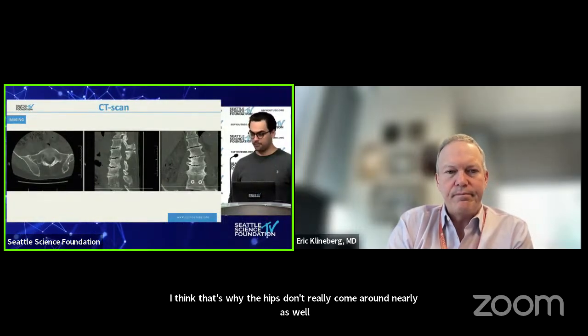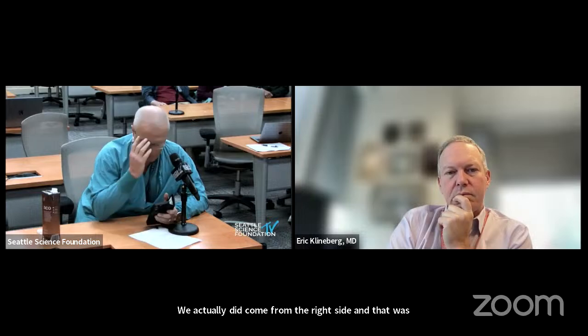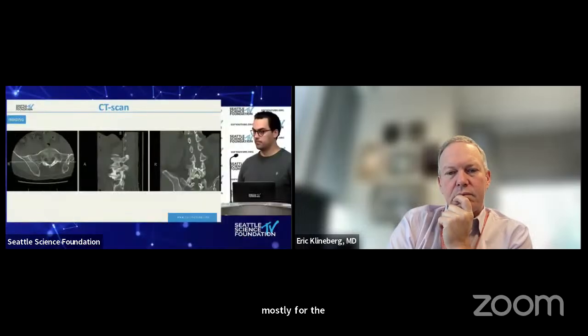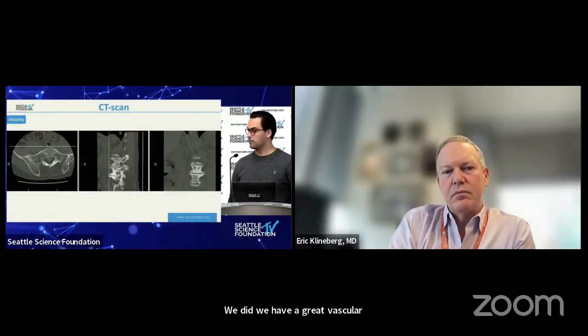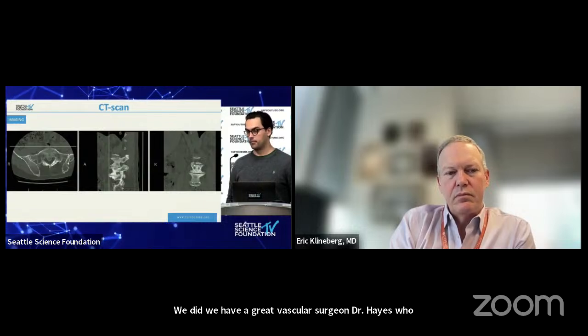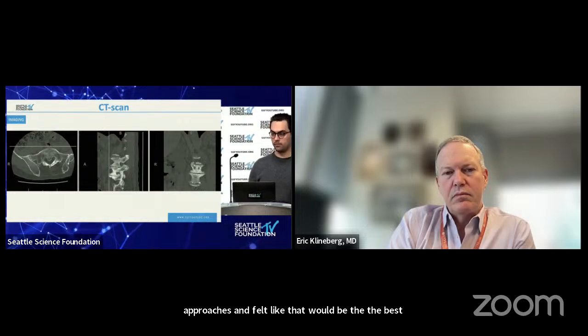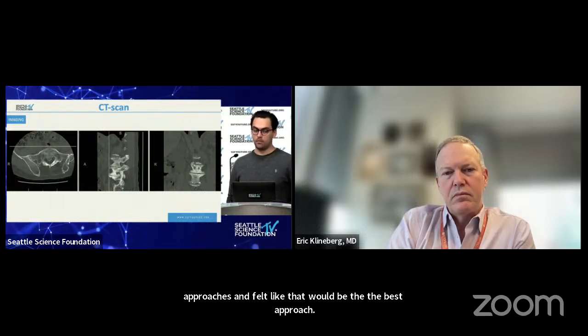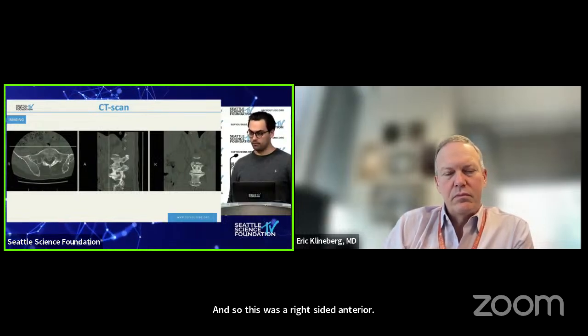Every single lumbar level here is essentially fused together, so mobilizing this is going to be challenging. He's been sitting in this position for a very long time, which is why the hips don't really come around nearly as well. We came from the right side for the anterior approach — mostly for vascular anatomy. Our vascular surgeon Dr. Hayes is very comfortable with right or left-sided approaches and felt right-sided anterior was best. Clinically the patient is very happy with his results.